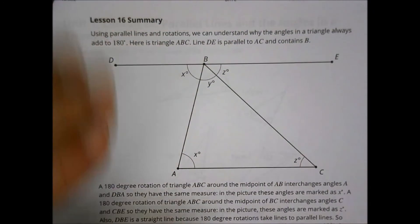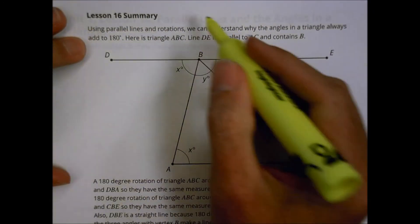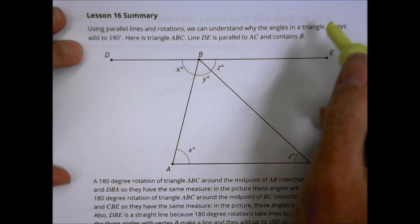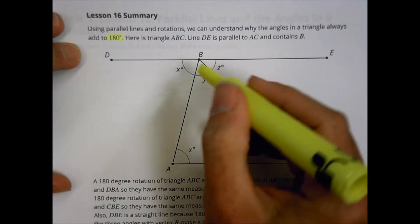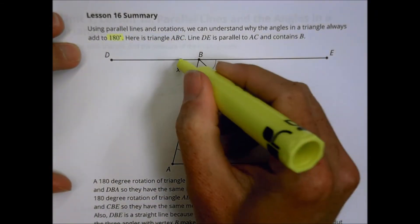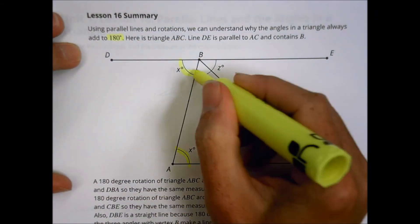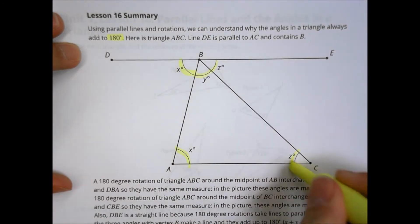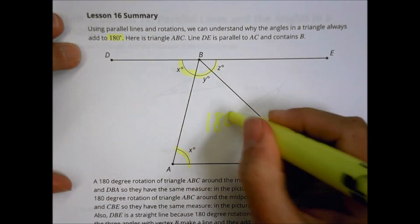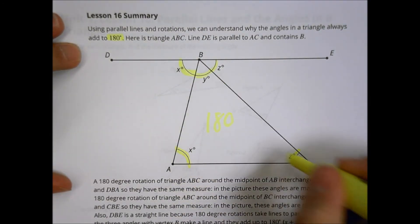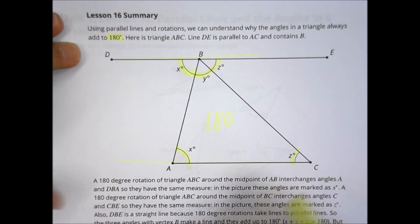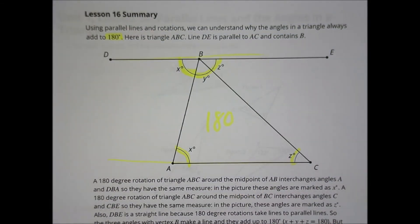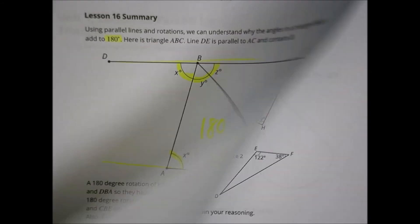In summary for today's lesson: we can use parallel lines and rotations to see why a triangle always adds up to 180 degrees. X matches X, Y matches Y, and Z matches Z — we end up with 180 because of the parallel lines, and we can do that with any triangle all the time.